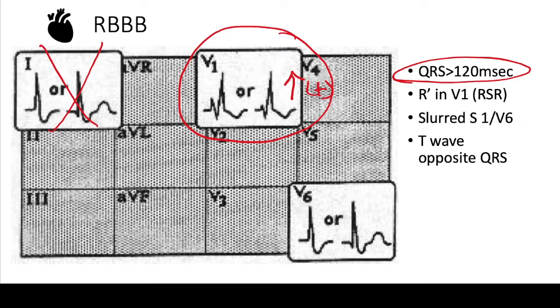Again, do not look at lead one or V6. Do not try to find these other criteria because that will just confuse you. Here, with right bundle branch block, the majority is positive, so you know it's a right bundle.